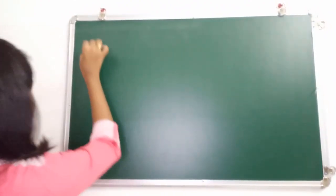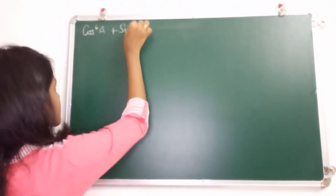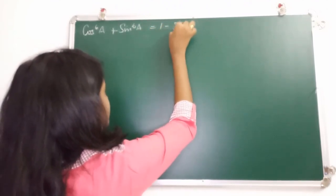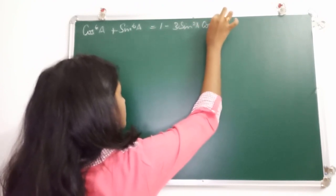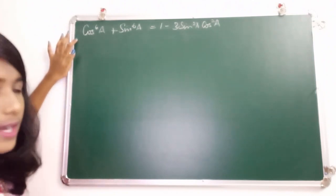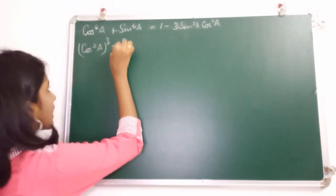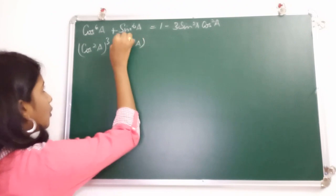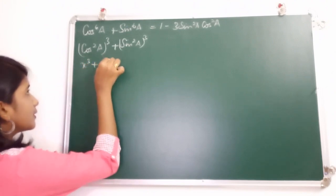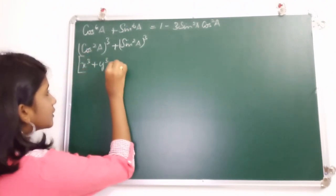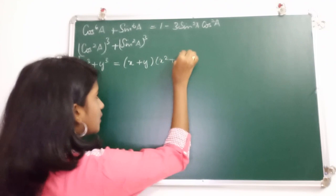For the next proof: cos⁶A + sin⁶A equals 1 minus 3sin²A cos²A. This can be written as (cos²A)³ + (sin²A)³, which is in the form x³ + y³ equal to (x + y)(x² + y² minus xy).